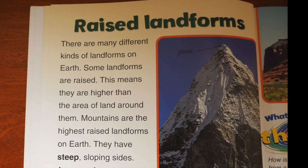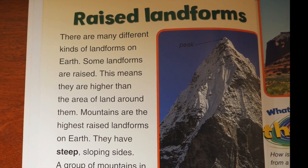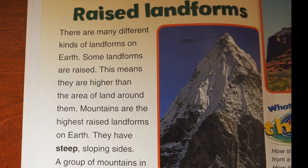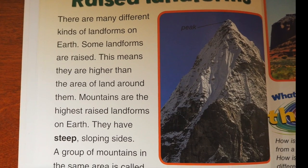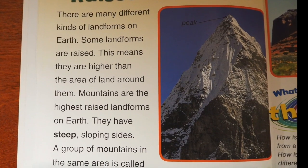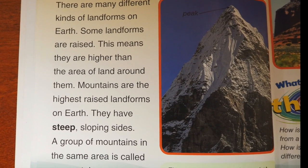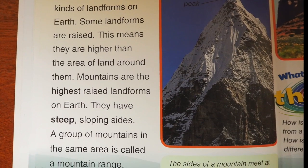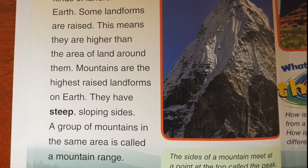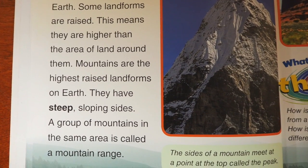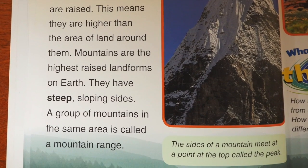There are many different kinds of landforms on Earth. Some landforms are raised, meaning they are higher than the area of land around them. Mountains are the highest raised landforms on Earth. They have steep, sloping sides. A group of mountains in the same area is called a mountain range.